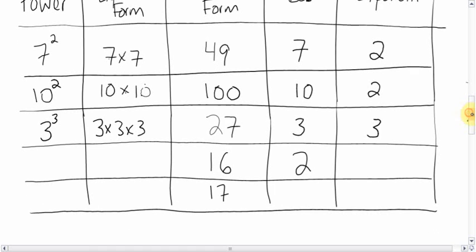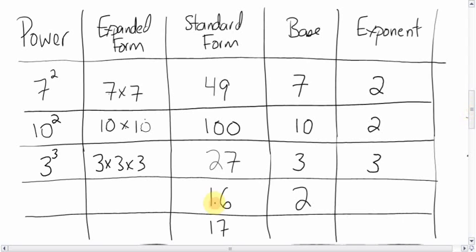Next, if you are given the standard form being 16, and the base has to be 2, what that means is it's 2 to the power something. 2 times itself how many times will give you 16? Let's figure this out. 2 times 2 is 4, 4 times 2 is 8, 8 times 2 is 16. So that is your expanded form. How many times do we need to use this? 1, 2, 3, 4. So the exponent is 4. We'll put a 4 there too.